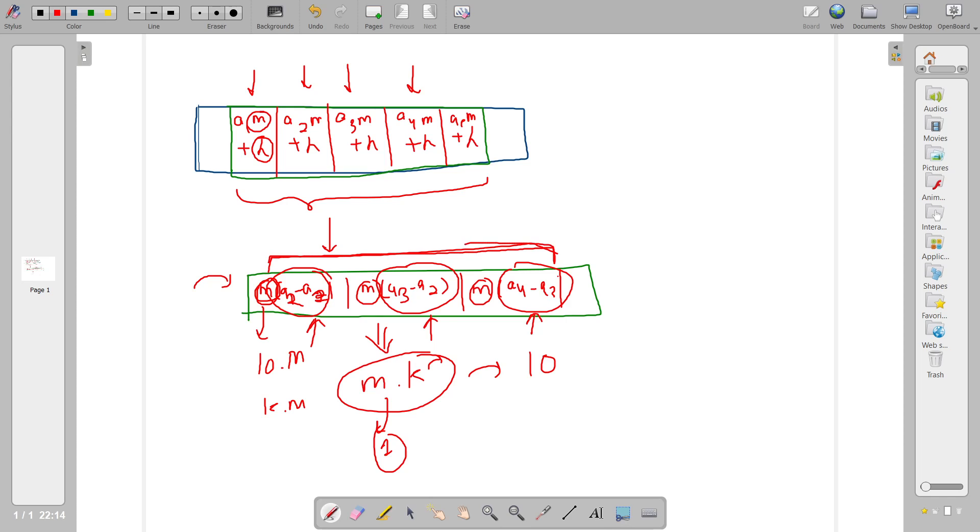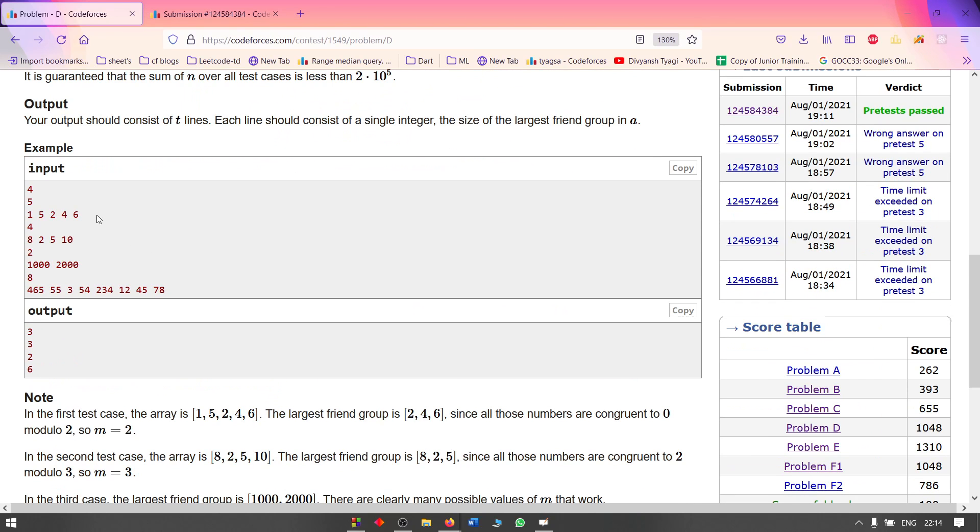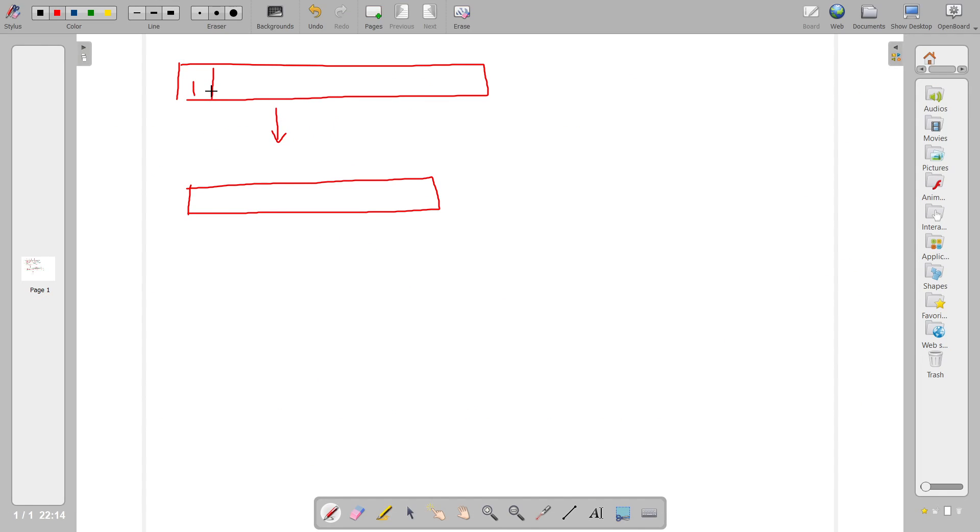You only have to check if the GCD is greater than 1. Now one approach which came to my mind is when you are given this array, you first of all convert it into an array with consecutive differences. So if the array is 1, 5, 2, 4, 6, convert it into 4, minus 3, 2, and 2. In this you have to find any sub-array which has the GCD greater than 1.